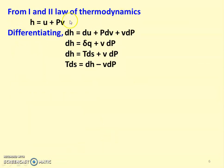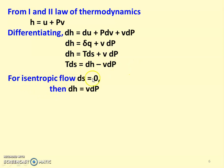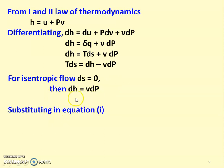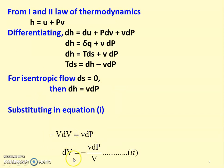From the first and second laws of thermodynamics, H = U + PV. Differentiating: dH = dU + P·dV + V·dP. Since dU + P·dV = δQ, we get dH = δQ + V·dP. From the second law, δQ = T·dS, so for isentropic flow dS = 0, giving dH = V·dP. Substituting into equation 1: −V·dV = V·dP, so dV = −v·dP/V (equation 2).